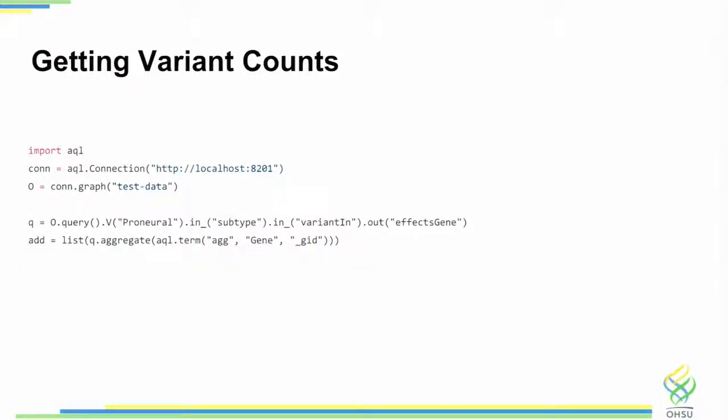Then if you want to do aggregation queries, this is, again, go from the proneural subtype, grab all of the patients, find the variants in them, go to the genes that those variants are connected to and do an aggregation query. So this will find the counts of mutations for this particular subtype.